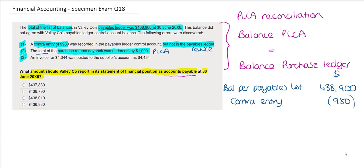Our third error states that an invoice for 4344 was posted to the supplier's account as 4434. So here we have a transpositional error. The difference between these two amounts is $90 and we can see what was posted to the supplier's account was bigger than what should have been posted as per the invoice value and so therefore we're going to need to reduce our payables list for this invoice error.